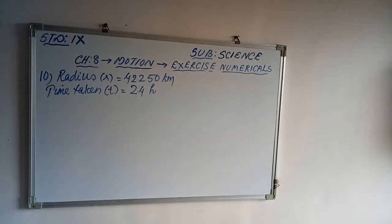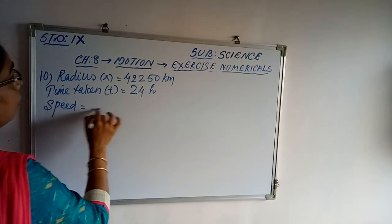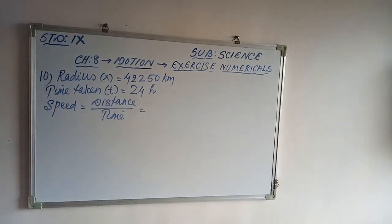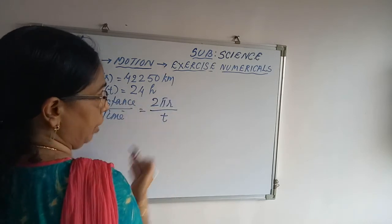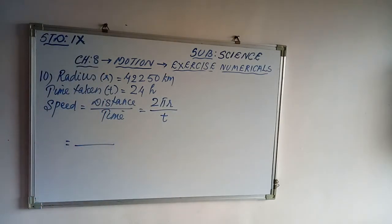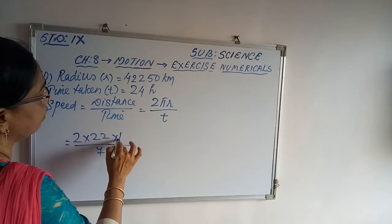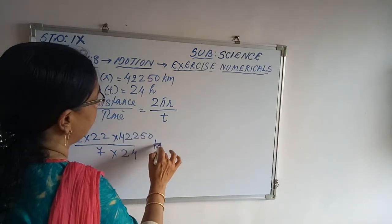We have to find the speed. Speed equals distance upon time. As the satellite's path is circular, distance is the circumference. So speed = 2πR/T = 2 × (22/7) × 42,250 / 24 kilometers per hour.